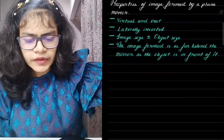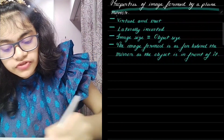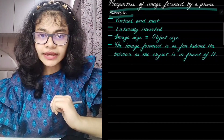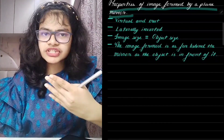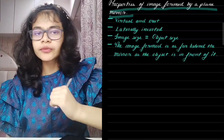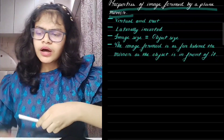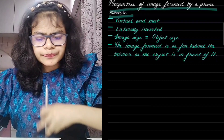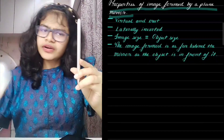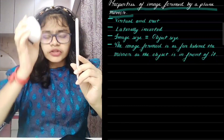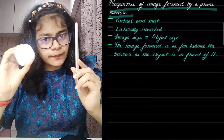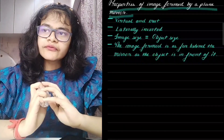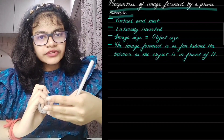Now, properties of an image formed by a plane mirror. This means the properties specific to a plane mirror. Here is my mirror and this is my object. The first property: the image is virtual and erect.